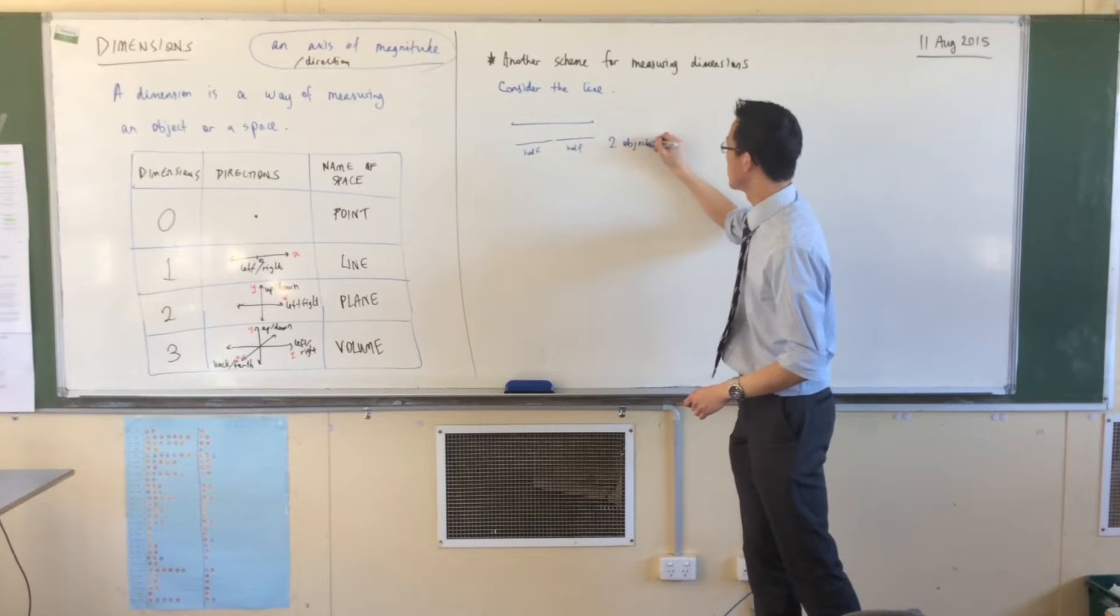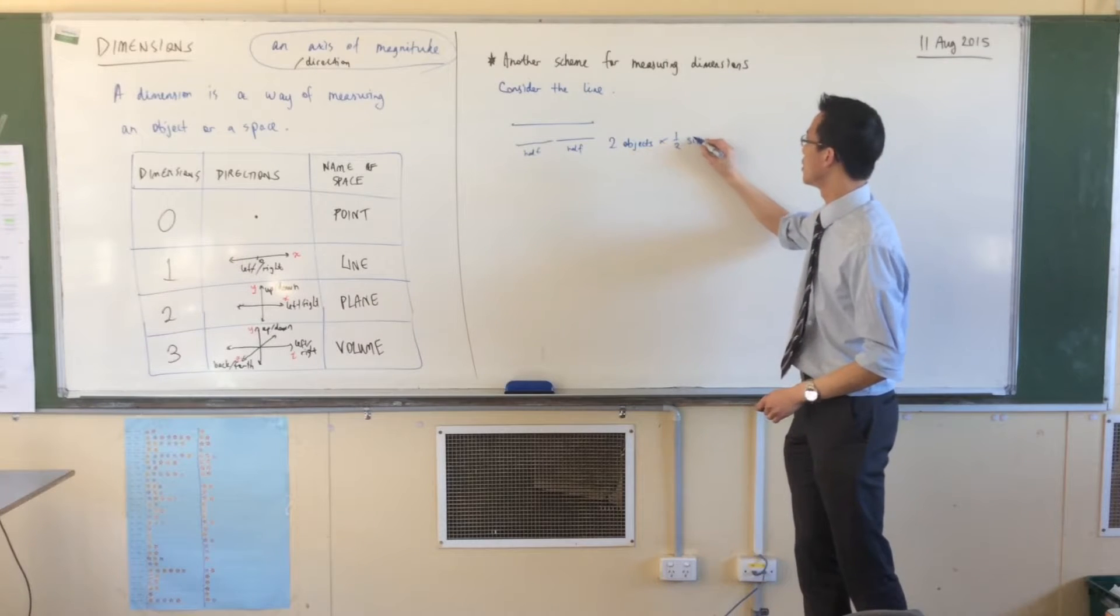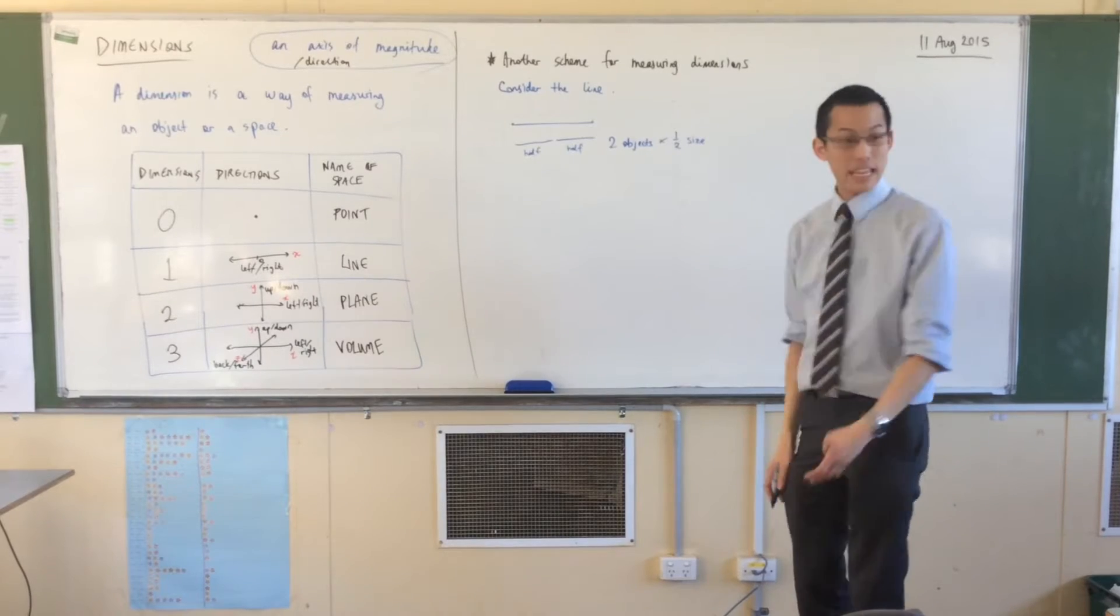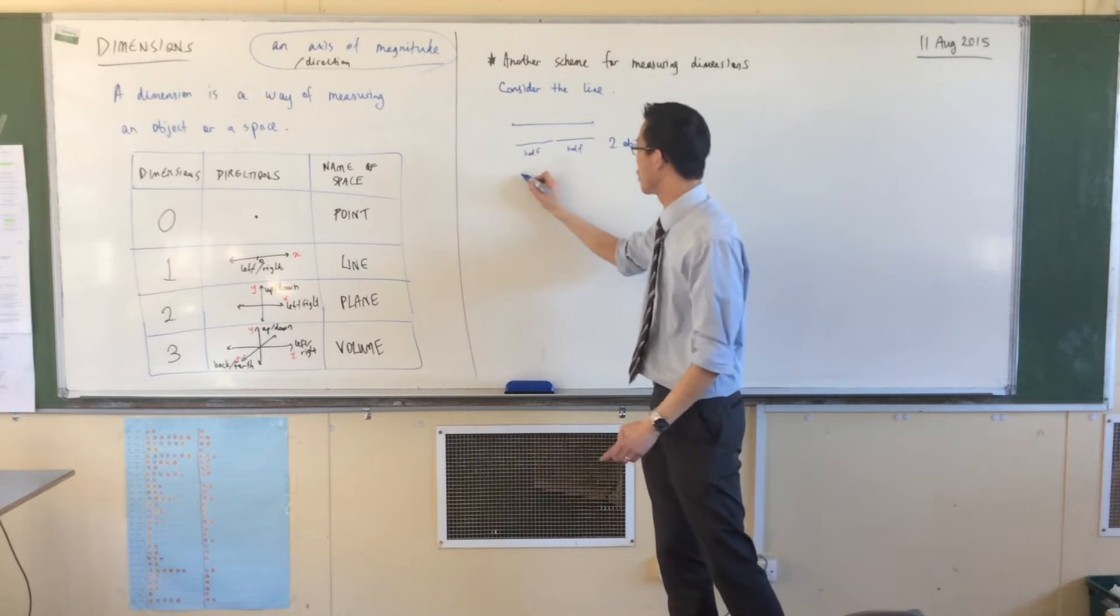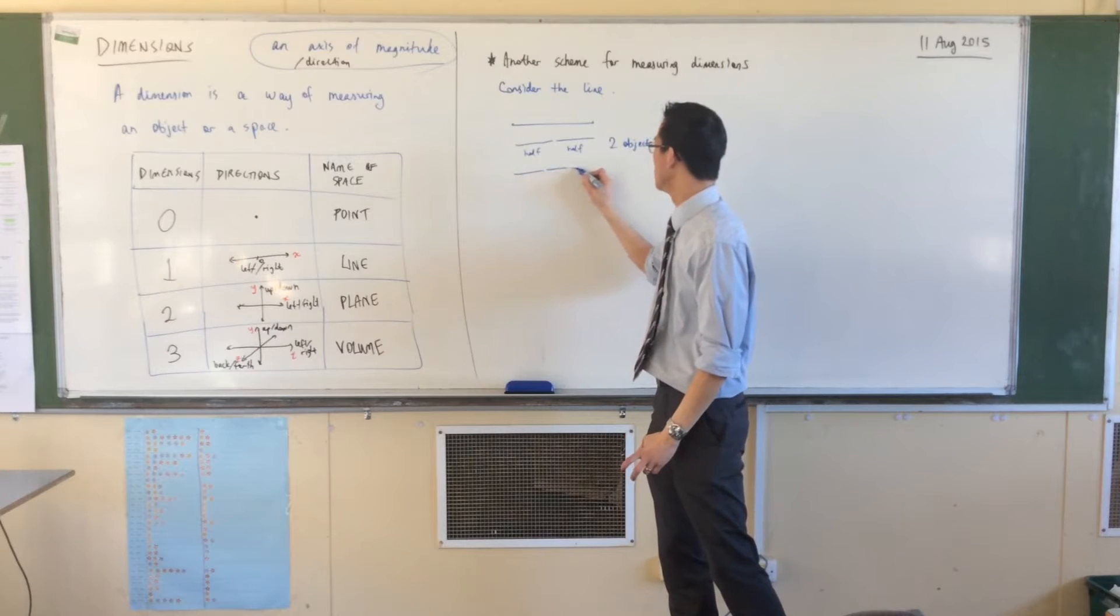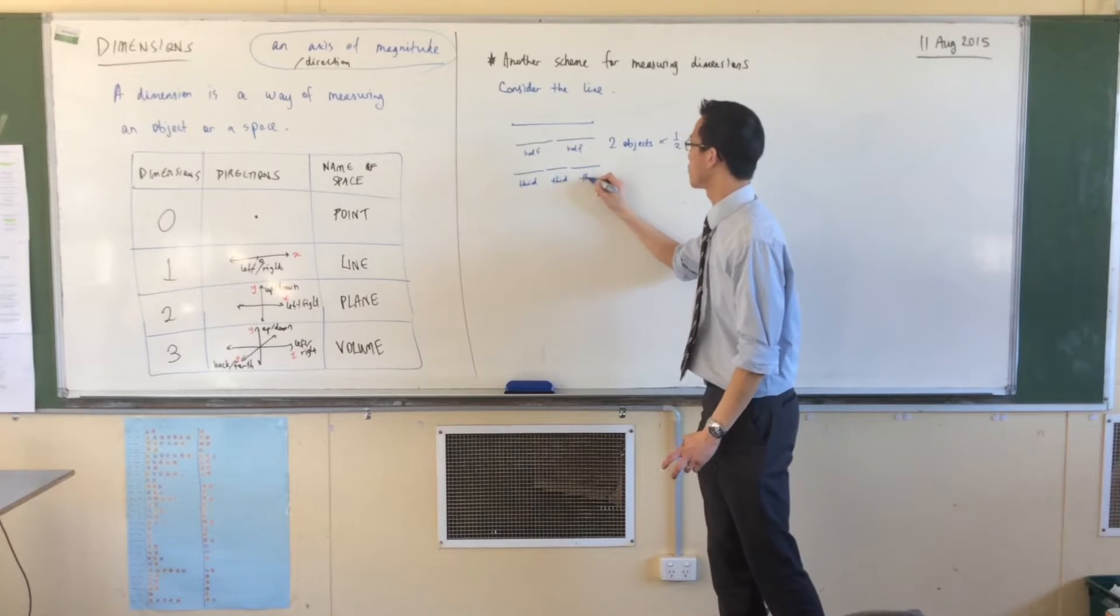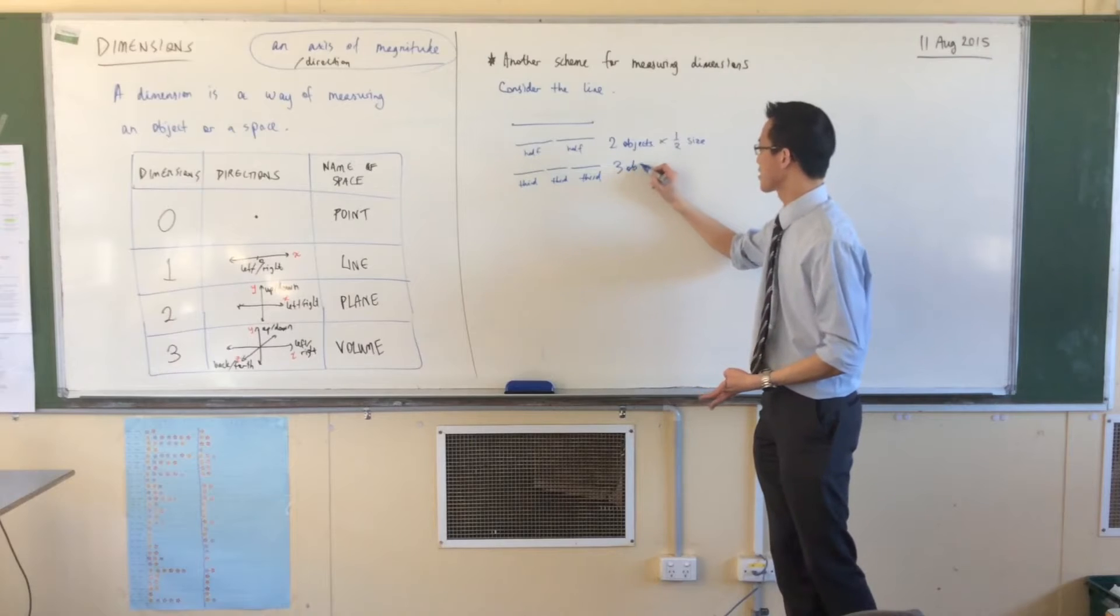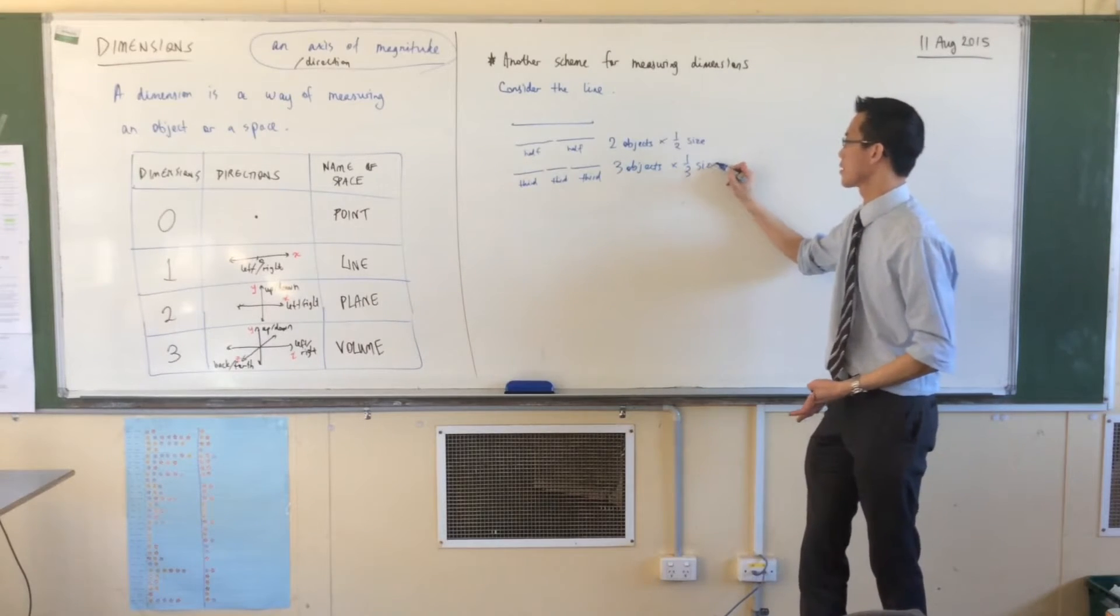So I've got two objects that are half this size. Does that make sense? In exactly the same way, I could divide it into smaller pieces if I like. I could go thirds, for instance. One, two, three, that's a third, that's a third, that's a third. So I've got three objects that are a third this size.